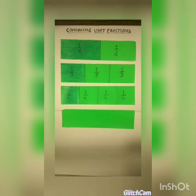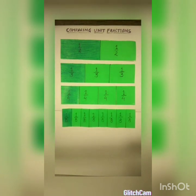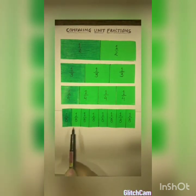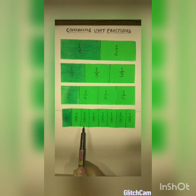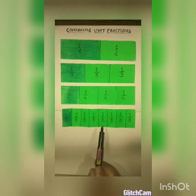I will take the fourth and last strip and will divide it into eight equal parts — like this. And I have colored one part out of eight parts.